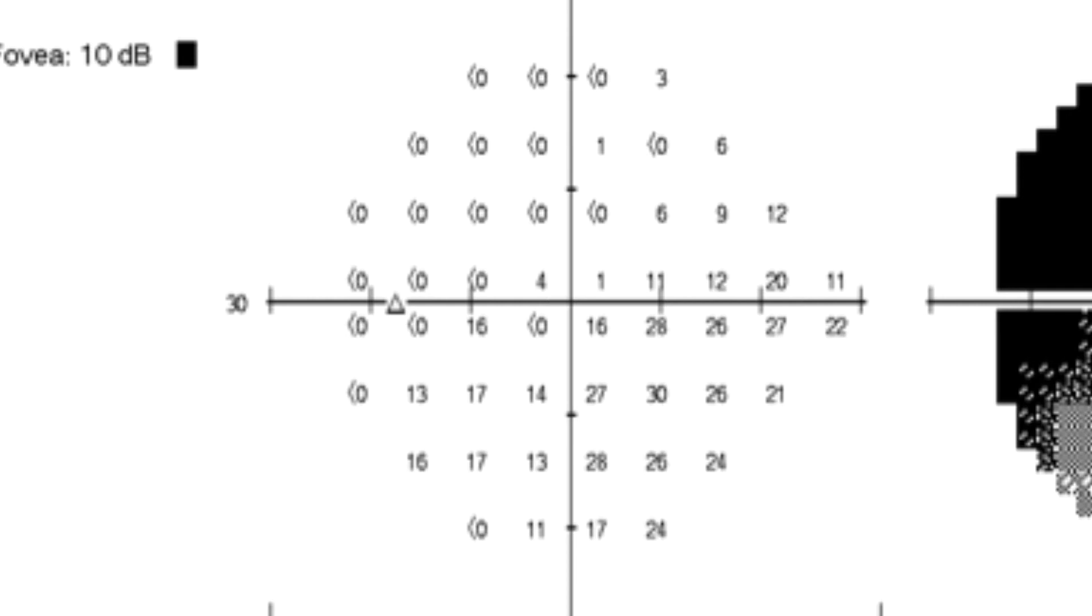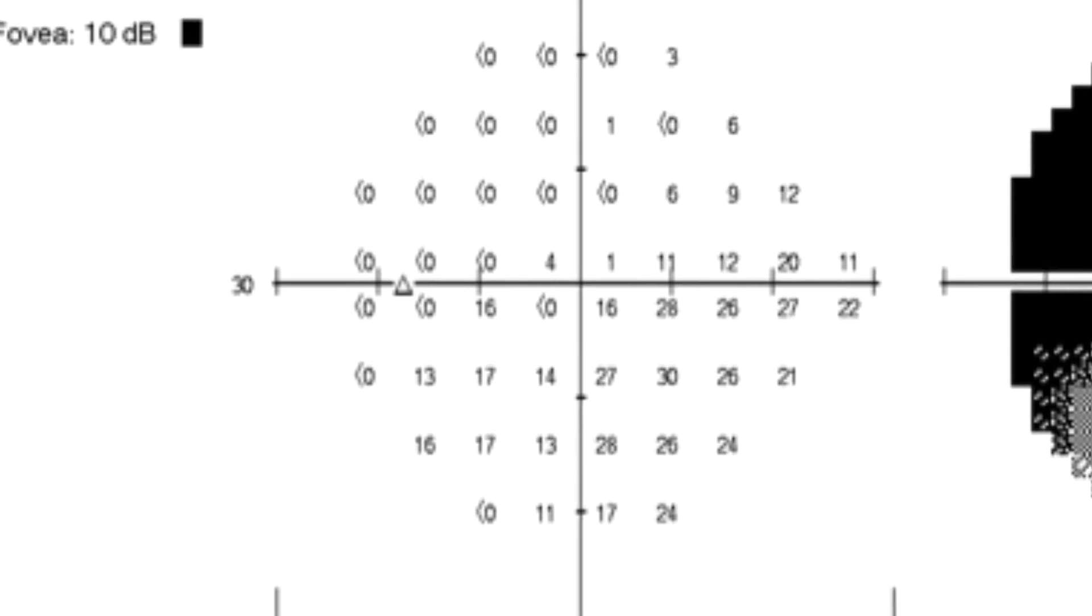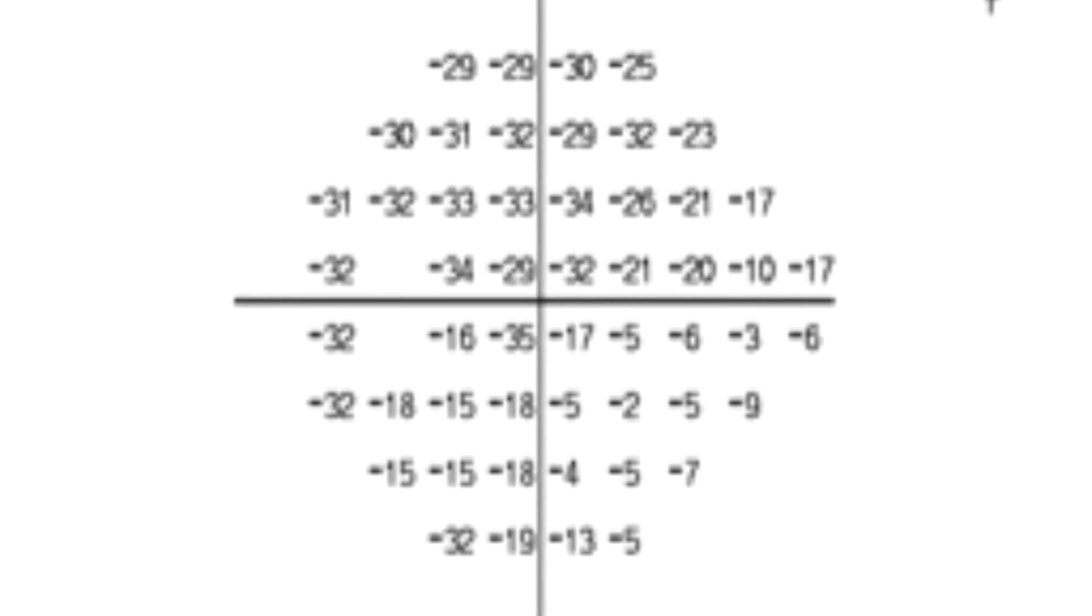If you are wondering just how abnormal those thresholds are, look at a plot of the raw data compared to how an age-matched patient with a normal visual field would have scored at each test point. Here the numbers represent deviations from normal. Plus numbers tell of better than normal performance, minus numbers tell of worse than normal performance. The higher the number, the greater the deviation from normal.